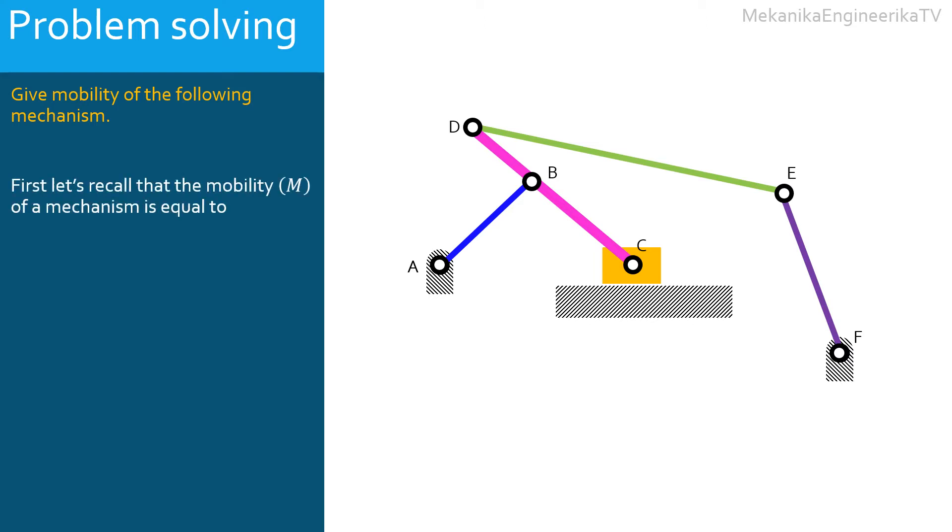First, recall that the mobility M of a mechanism is equal to 3(L - 1) - 2J1 - J2.